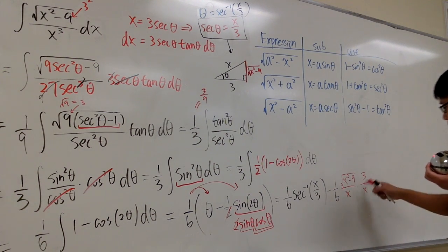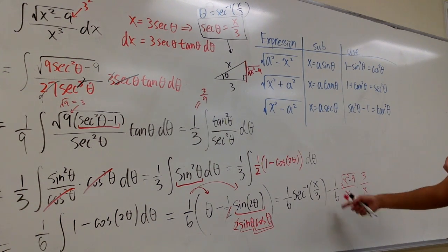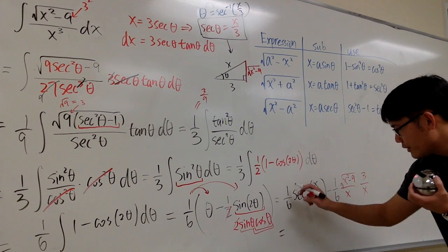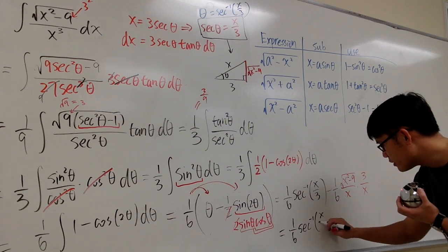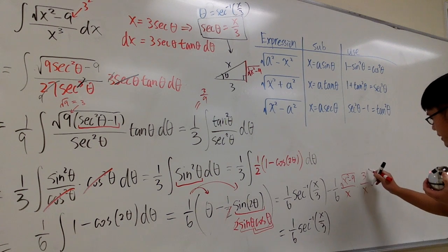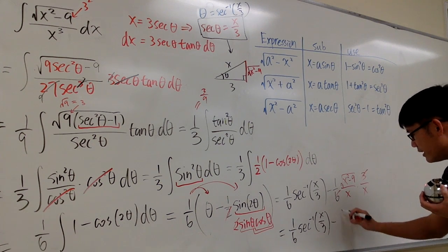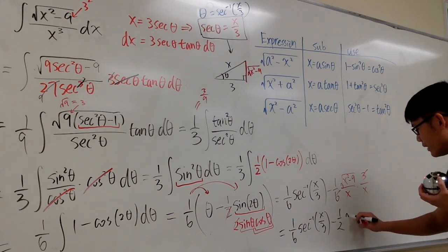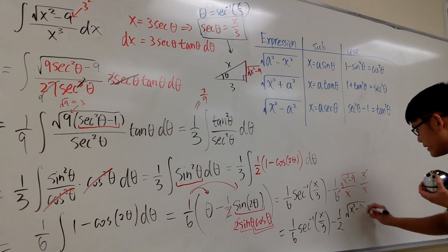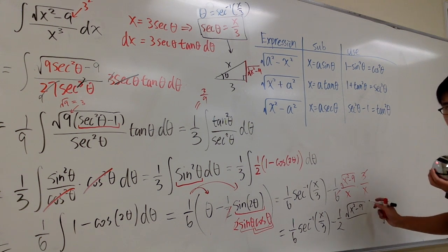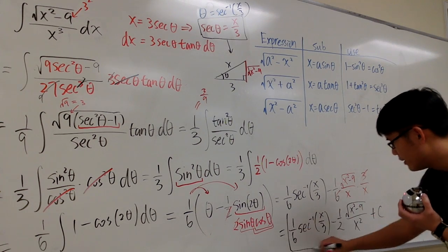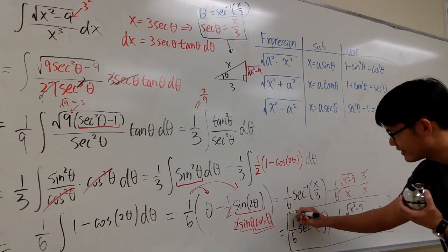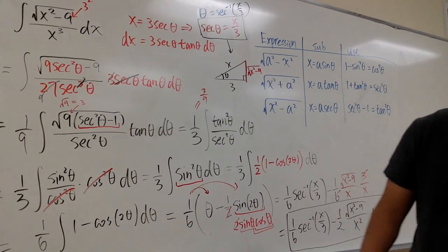We can do a little simplification: the 3 from cosine theta and the one over 6 cancel, giving one over 2x. So finally, the answer is one over 6 times inverse secant of x over 3, minus one half times square root of x squared minus 9 over x squared, plus C. Get ready for the next one!